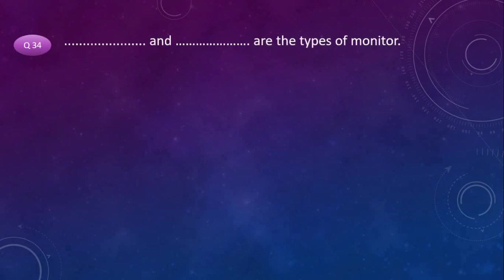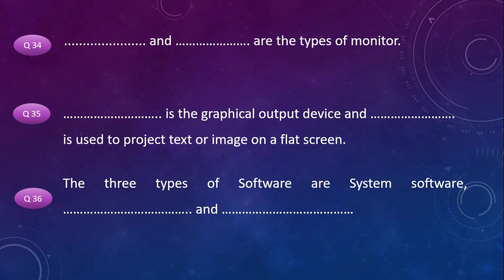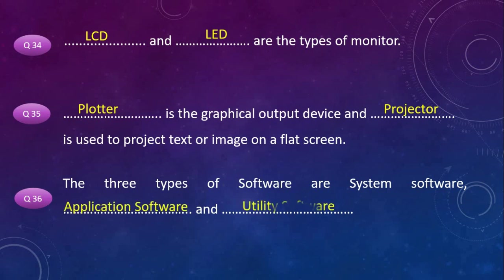The types of monitor are LCD, LED, and CRT. Plotter is a graphical output device, and projector is used to project text or images on a flat screen. The three types of software are system software, application software, and utility software.